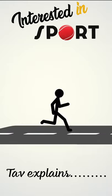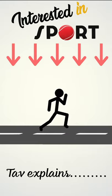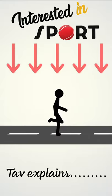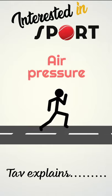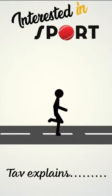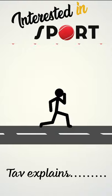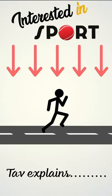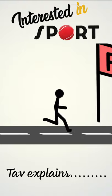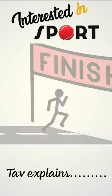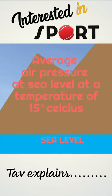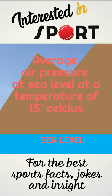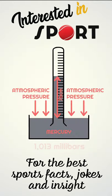The air around you has weight and it presses against everything it touches. That pressure is called atmospheric pressure or air pressure — the force exerted on a surface by the air above it as gravity pulls it to earth. An atmosphere is a unit of measurement equal to the average air pressure at sea level at a temperature of 15 degrees Celsius. One atmosphere is 1013 millibars or 760 millimetres of mercury.